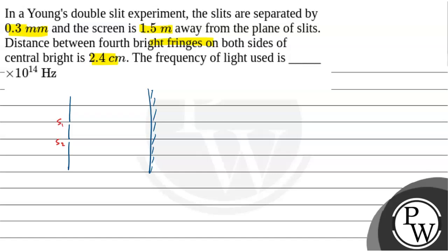Now, slit 1 or slit 2 se light aake interfere karta hai and we can see dark and bright fringes on the screen. Now, question mein bola gaya hai ki, let us say this is our center bright fringes. So, the distance between 4th bright fringes on both sides of the center fringes is 2.4 cm.